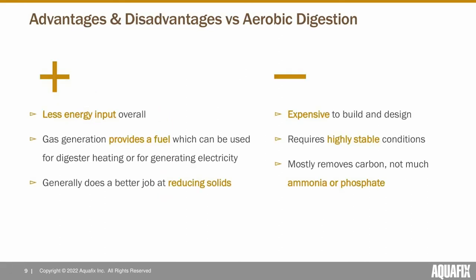Anaerobic digesters have a number of benefits compared to aerobic digesters. They require less energy input most of the time — the main energy need is heating the digester. If an anaerobic digester is running efficiently, methane produced is very effective at heating it; it can be burned on site to heat a boiler and recirculate liquids to maintain high temperature without using much energy, as opposed to aerobic digestion where you always need electricity to run an aerator.